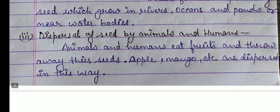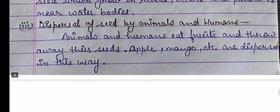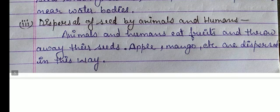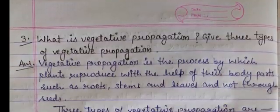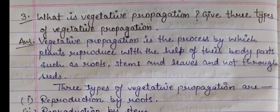Third, dispersal of seed by animals and humans. Animals and humans eat fruit and throw away their seeds. Apple, mango, etc. are dispersed in this way.